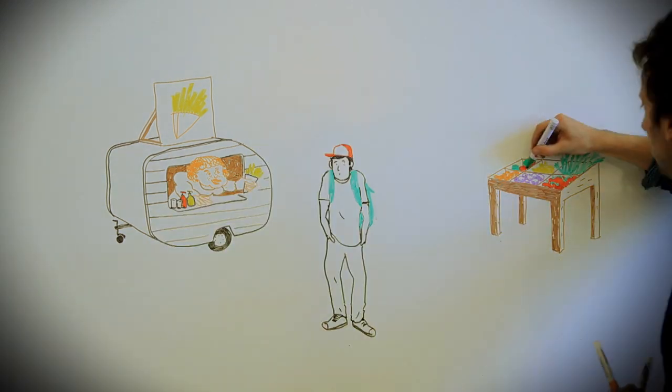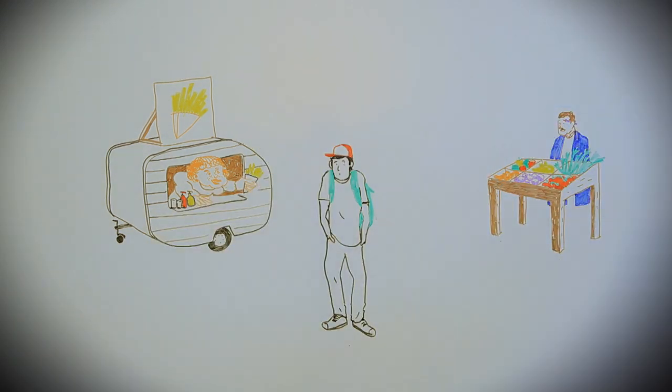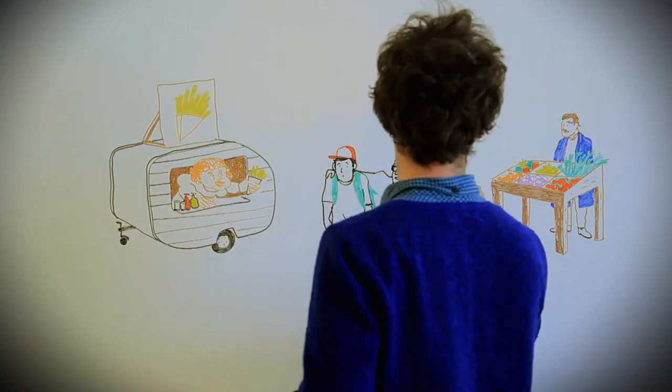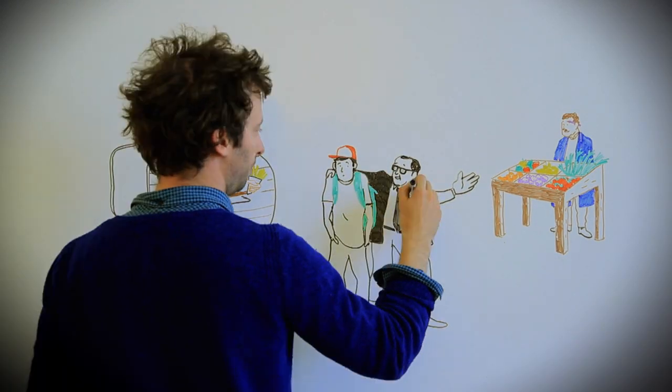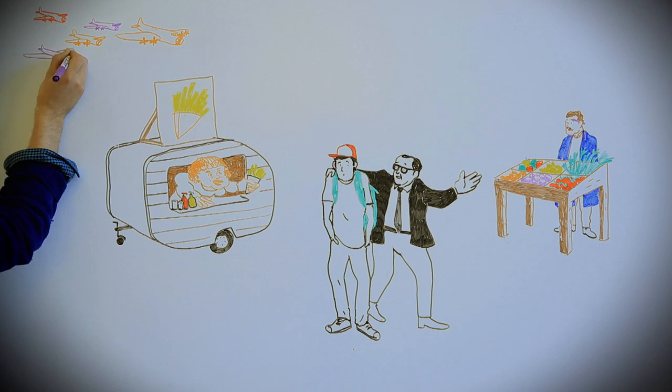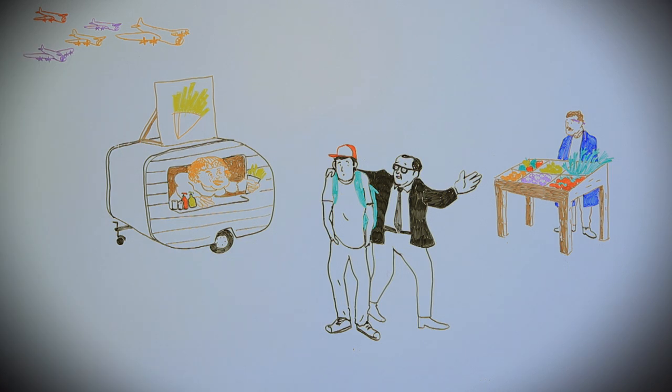National communication programs promoting the consumption of fruits and vegetables or encouraging physical activity are a good example of public health actions to improve the behavior of a population.